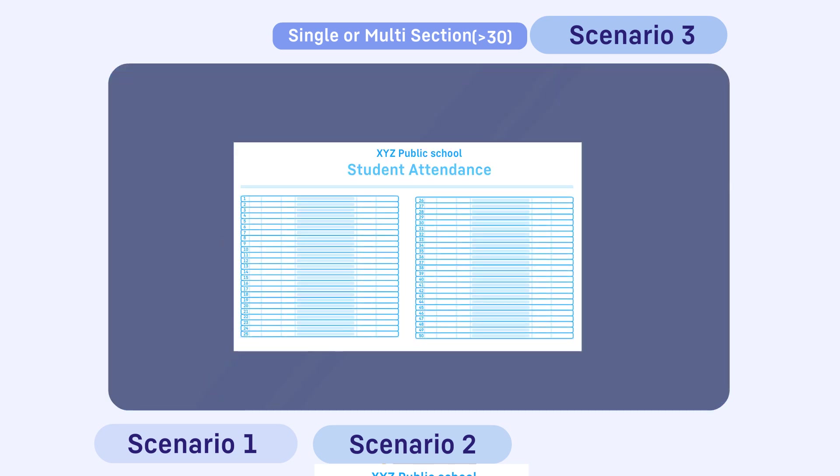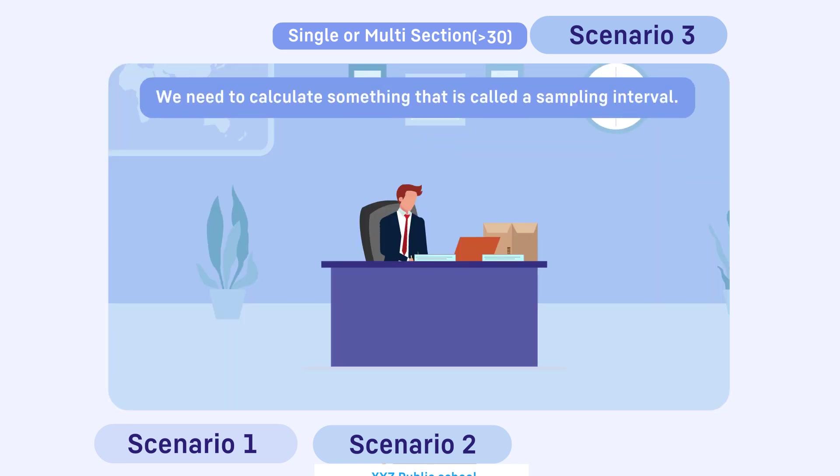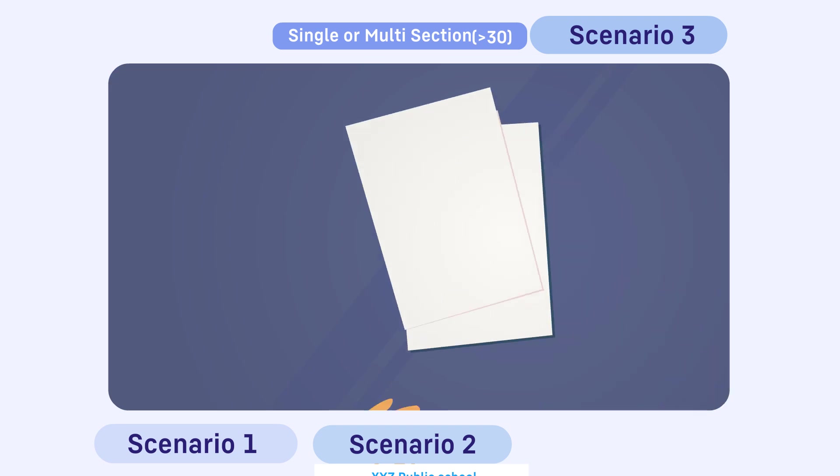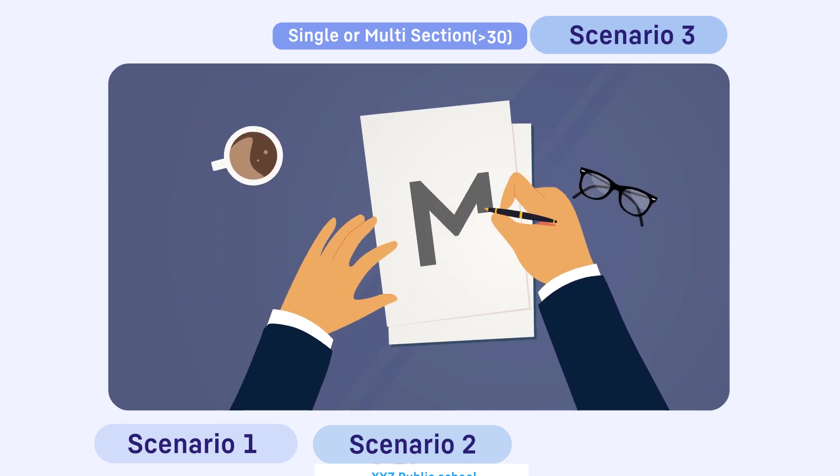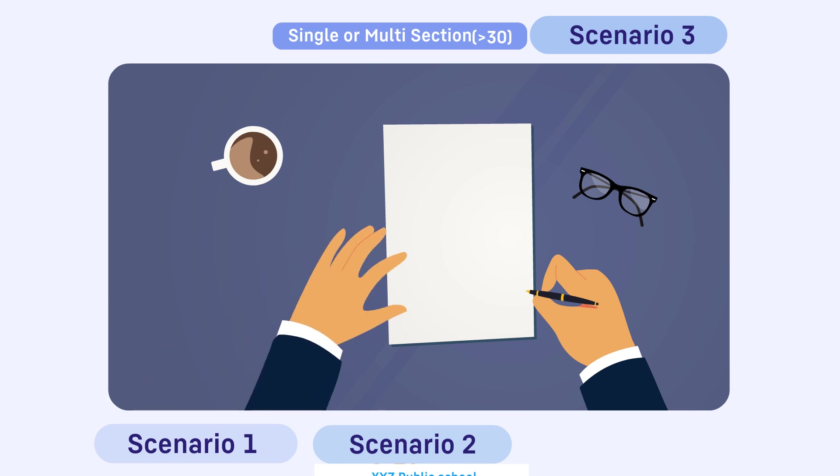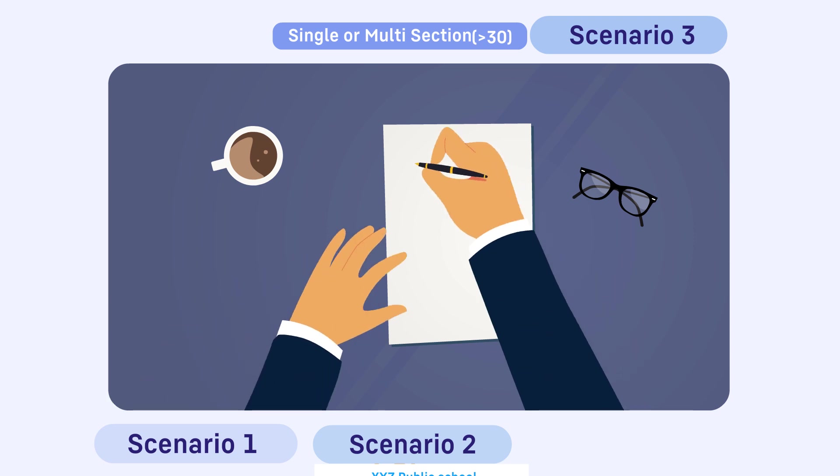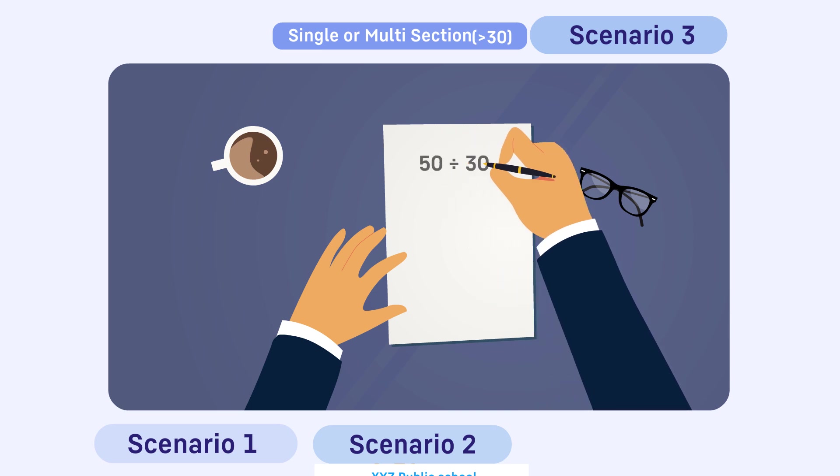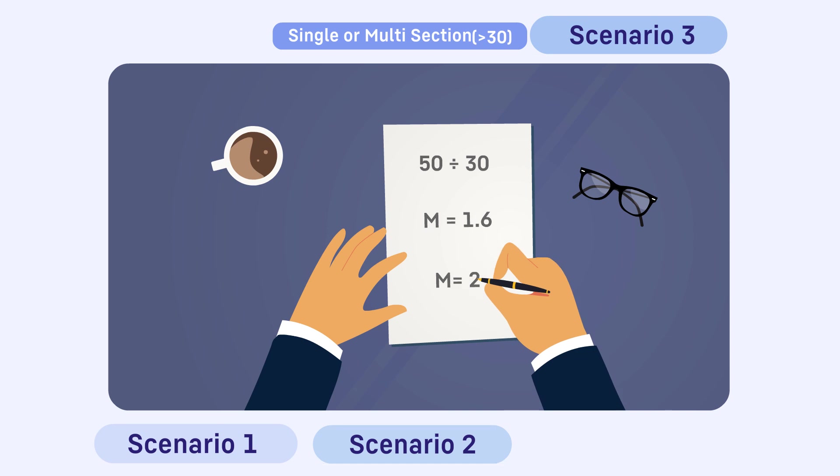In such a case, we need to calculate what is called a sampling interval. Let's denote that with M. To calculate M, divide the total number of students in section by 30. So in case of XYZ public school with 50 students in a section, divide 50 by 30 and you will get 1.6. Round off this number to the nearest integer, that is 2, so M equals 2.